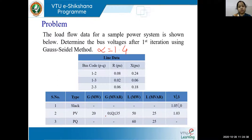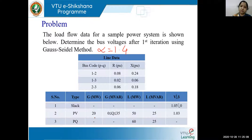Bus data will help you to know the type of buses in the system. The first bus is a slack bus. The second bus is a PV bus with specified voltage magnitude and Q limits. This particular bus 2 has both generation and load. So be very careful when you write P2 and Q2 for this bus. If this bus has a generator, you are injecting power at this bus as well as drawing power from the same bus.